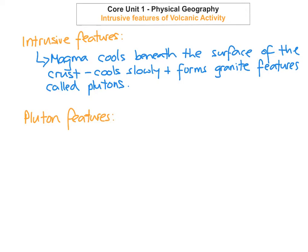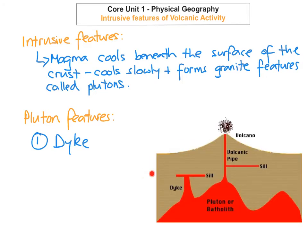There are a few different pluton features you need to know for your Leaving Cert Geography exam. The first one is a dike. Dikes are vertical sheets of magma that force their way into the cracks or fissures in the layering of rocks. Here's an image to explain what a dike is in a more visual sense — it's a vertical sheet of magma forced its way up into cracks within the Earth's crust. When it goes up in a vertical line, it cools really slowly, and this layer we call a dike.